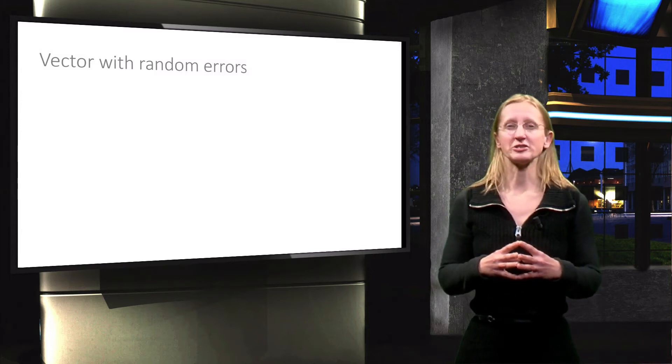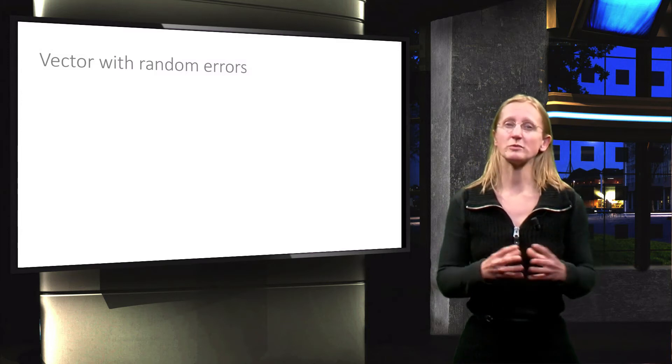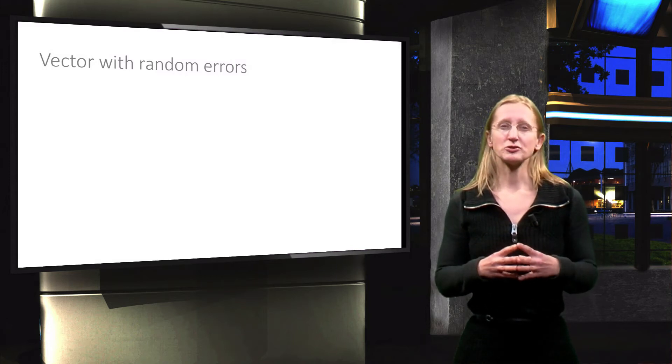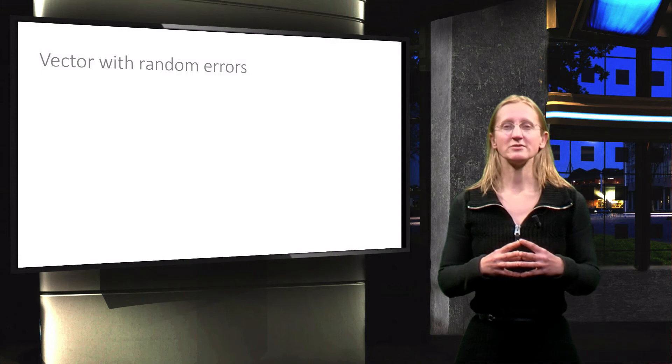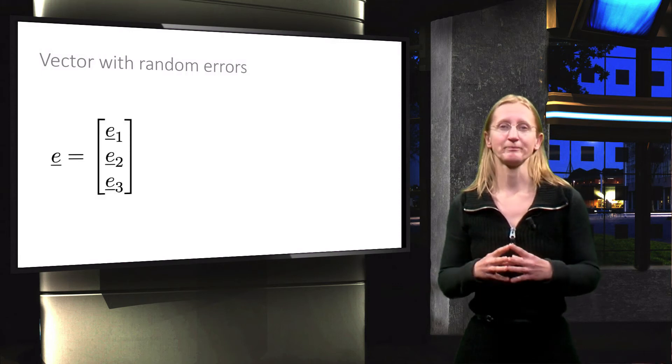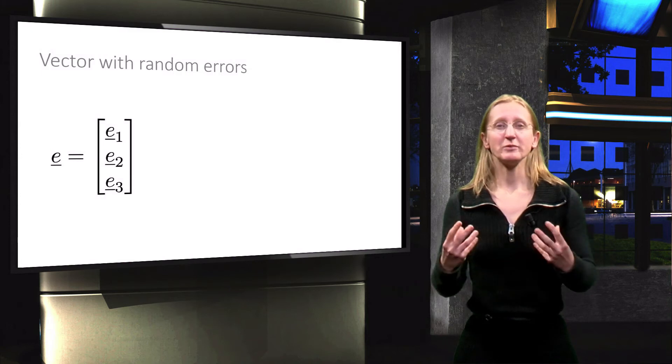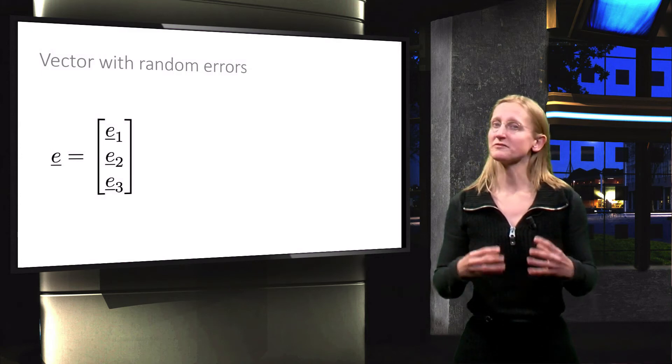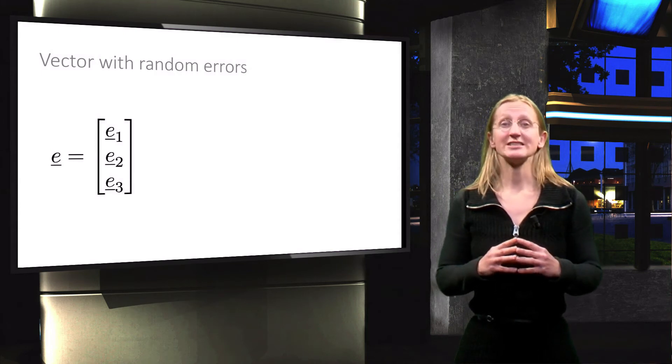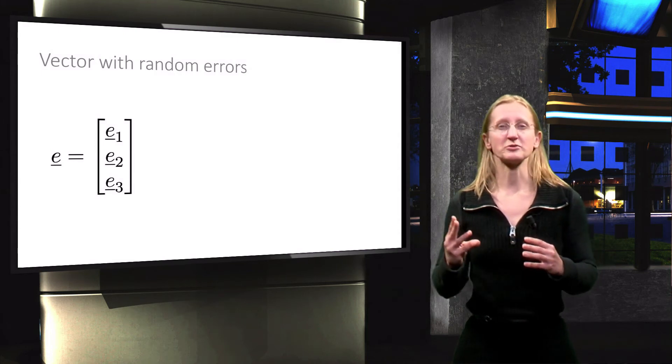So let's assume we know the precision that we will get with different instruments to measure with, and furthermore, let's assume we will collect three measurements and the corresponding random errors are collected in a vector. Even before taking the measurements we know the precision of this vector E. The covariance matrix describes the precision of the three observations.